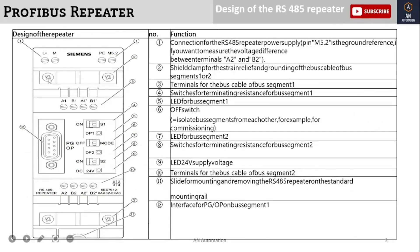Now the design of the RS485 repeater family. This is the diagram view of the repeater. You can see they have terminals for L+ and M — that is the 24-volt supply voltage, which we have to provide externally from an SMPS or other 24V sources. They also have a PE terminal, which is the protective earth terminal. You will have to earth the repeater properly to operate it correctly.